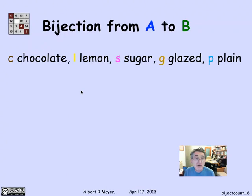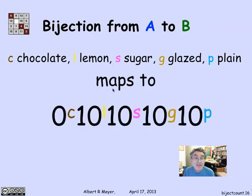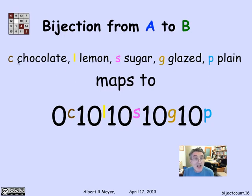The general bijection is that if I have a selection of C chocolate donuts, L lemon donuts, S sugar donuts, G glazed, and P plain of any number really, that a selection of donuts with this number of chocolates, lemons, glazed, plain corresponds to a binary word with C plus L plus S plus G plus P zeros and four ones.